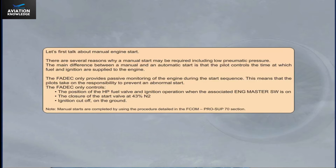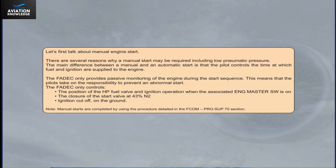There are several reasons why a manual start may be required, including low pneumatic pressure. The main difference between a manual and an automatic start is that the pilot controls the time at which fuel and ignition are supplied to the engine. The FADEC only provides passive monitoring of the engine during the start sequence, meaning the pilots take on responsibility to prevent an abnormal start. The FADEC only controls the position of the HP fuel valve and ignition operation when the associated engine master switch is on.